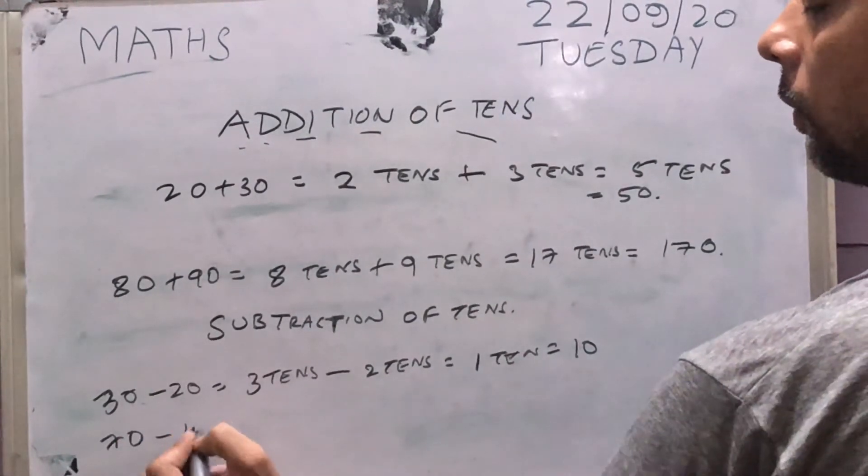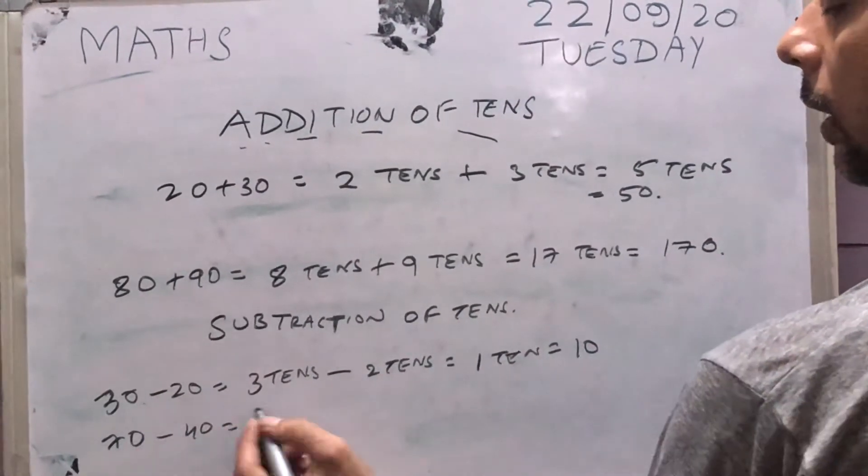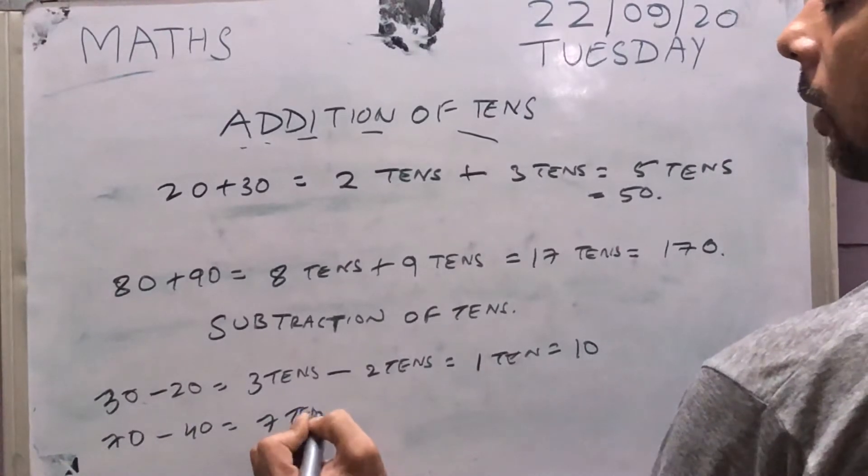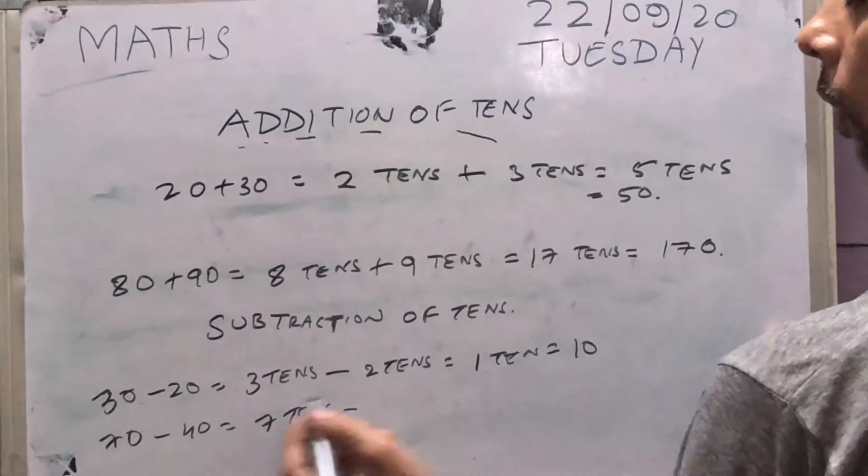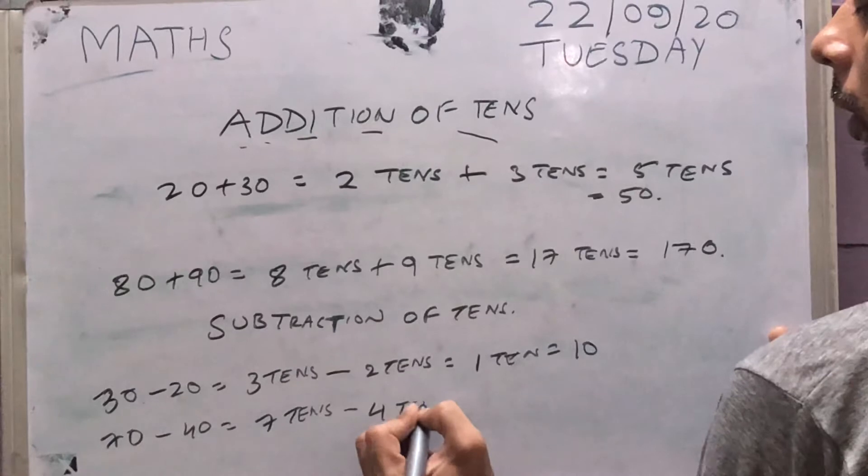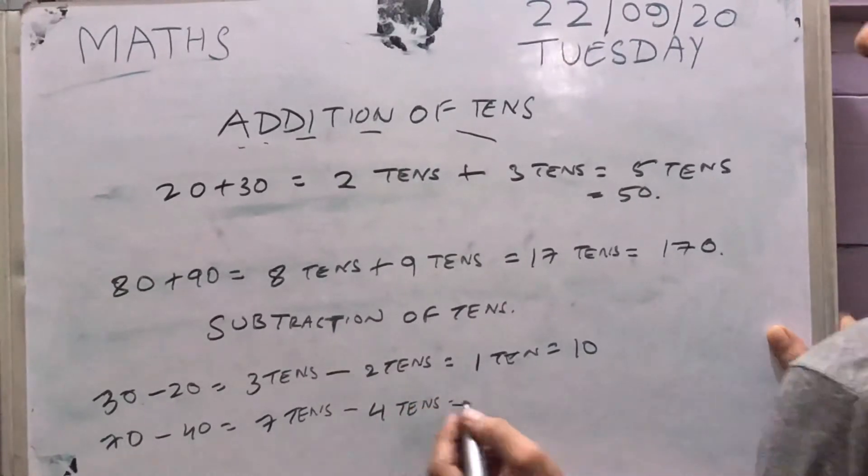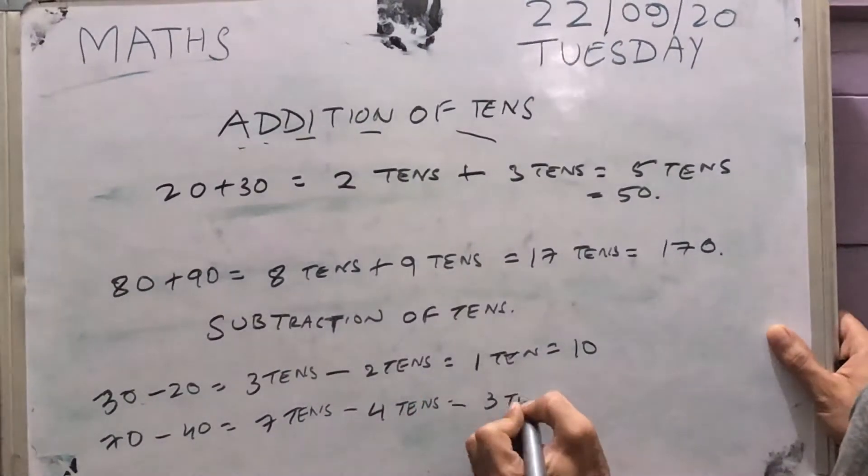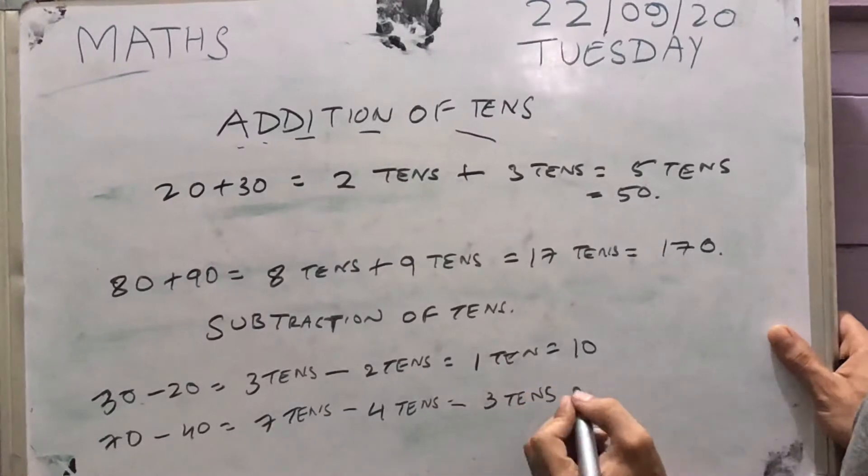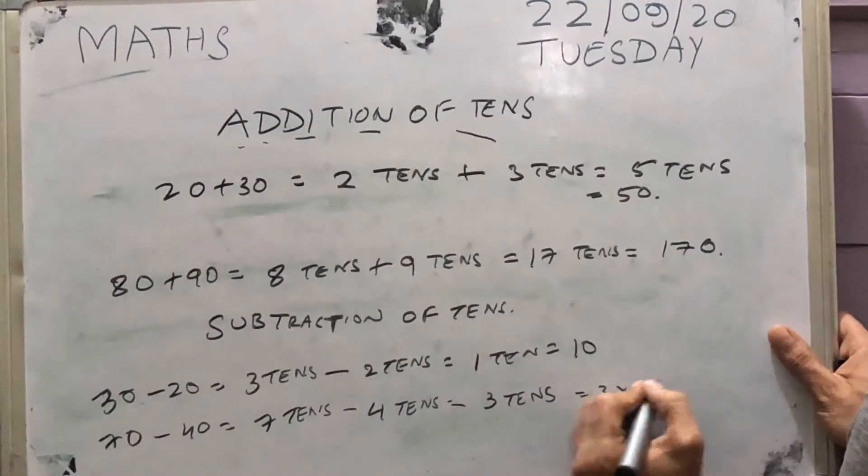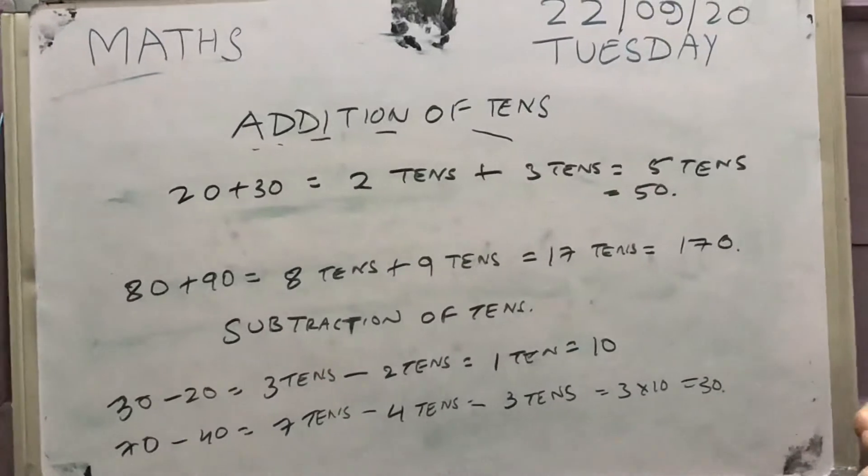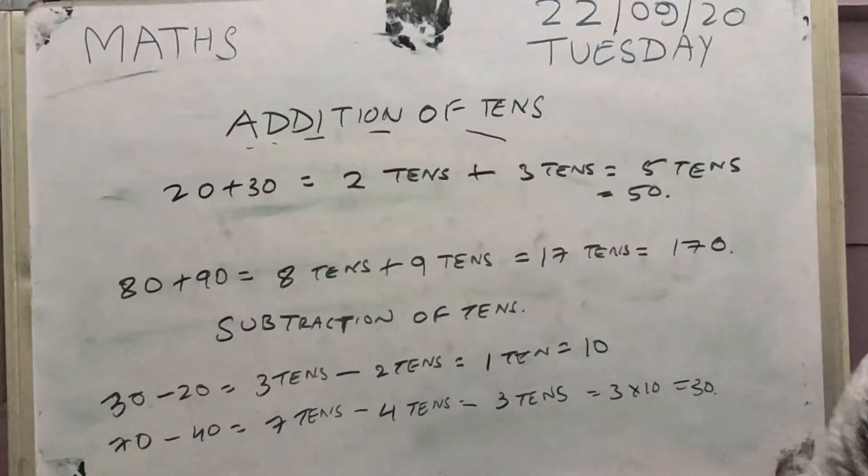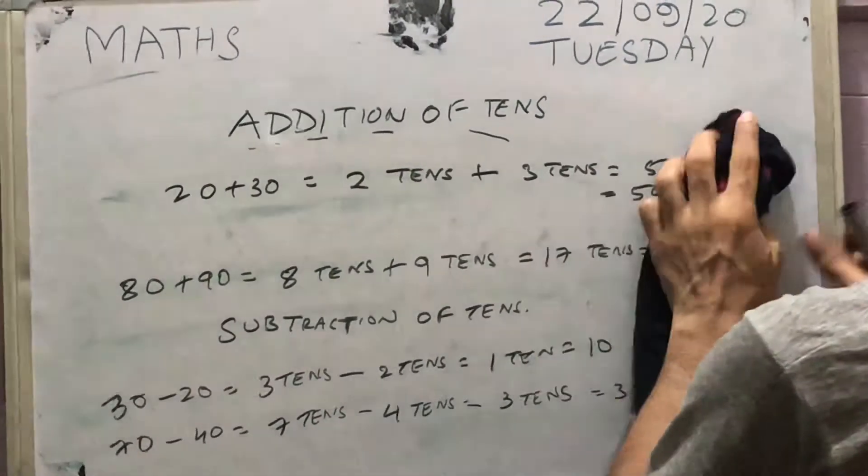Let's take one more example, 70 minus 40. 70 is nothing but 7 tens, and 40 is 4 tens. What is 7 minus 4? 3. And just copy down tens. Now 3 tens is nothing but 3 into 10, 30. And that is your answer. So this is how you can add and subtract using the tens method.